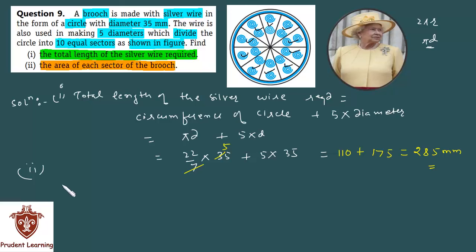We have to find area of each sector of the brooch, and it is equal to one-tenth of area of circle.